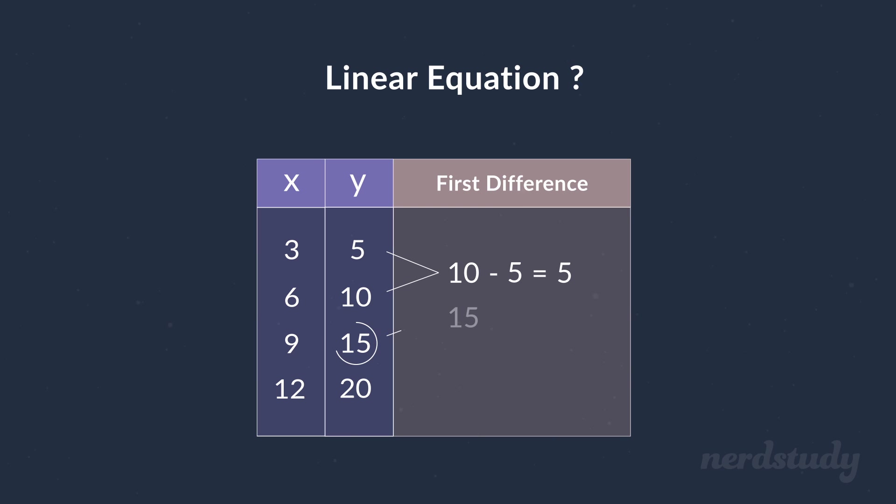Then we do the third value minus the second value, which equals five again. And then fourth value minus the third, giving us yet again, five as the value for the first difference.